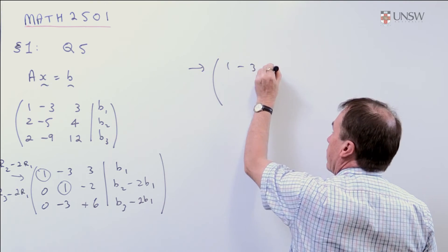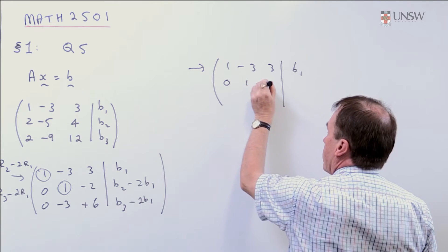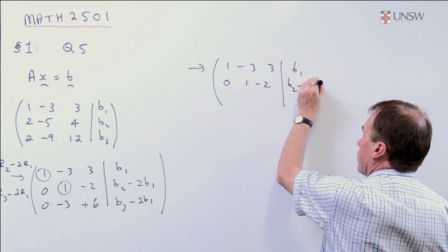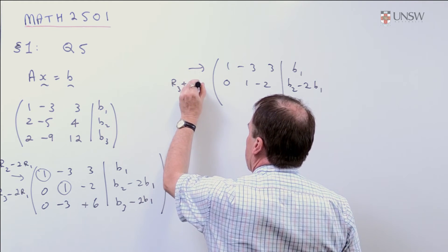So, copy down the first row, and copy down the second row. And I'm going to take now, I will take row 3 plus 3 row 2.